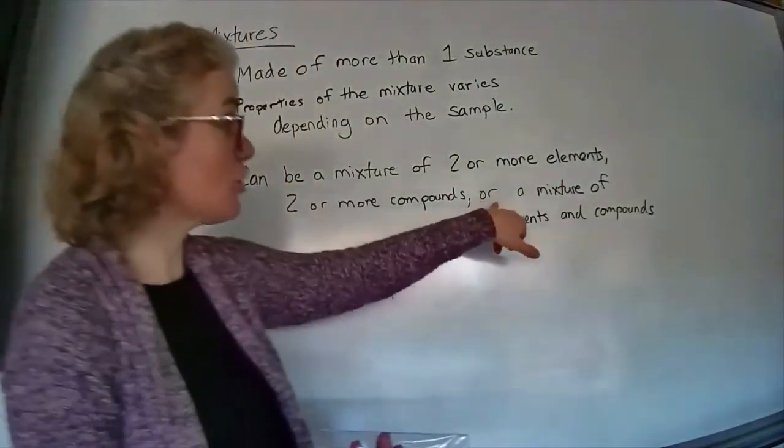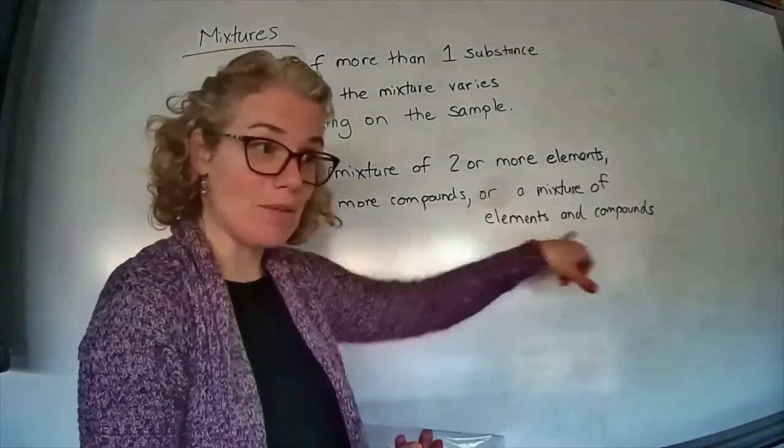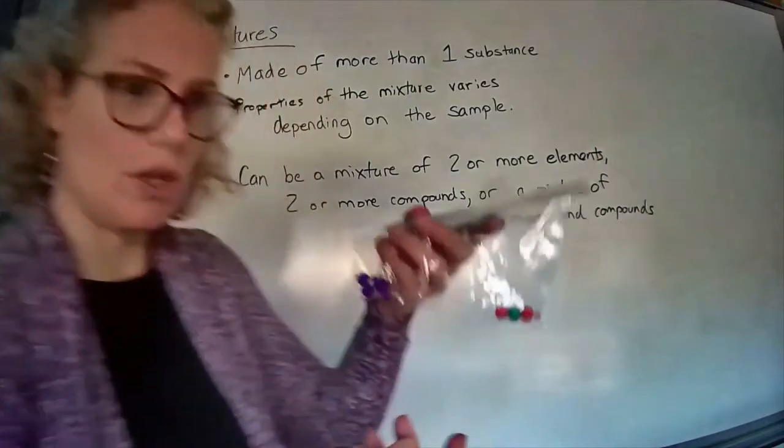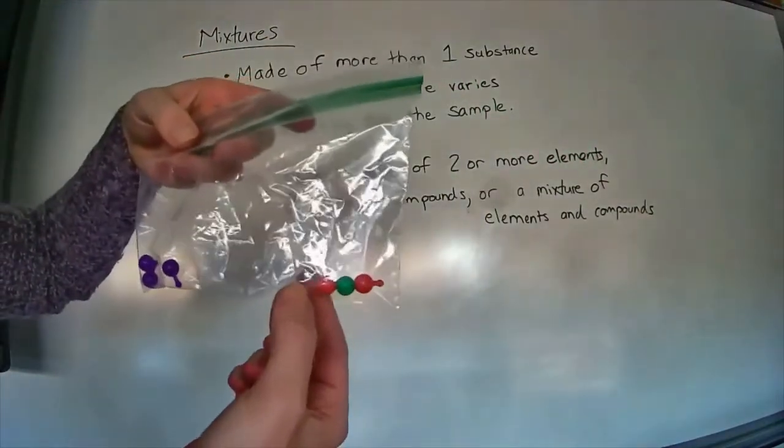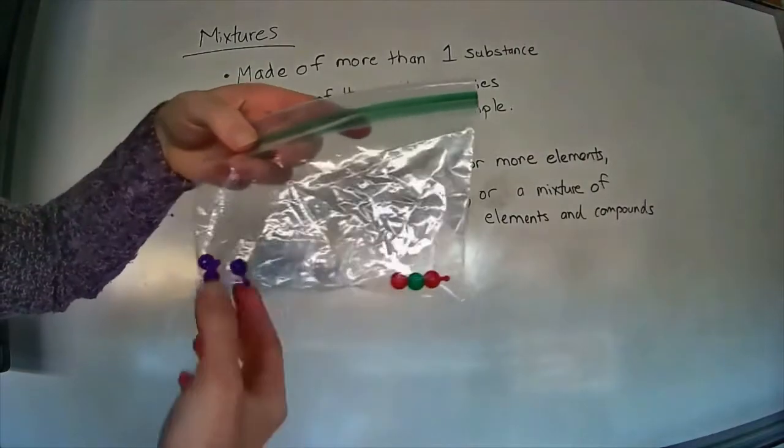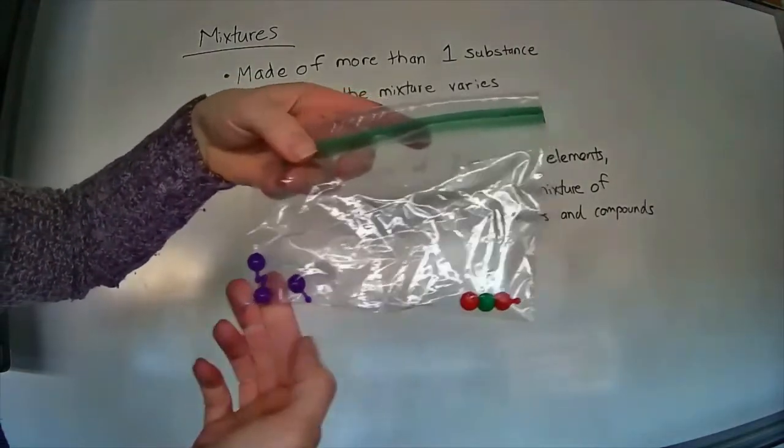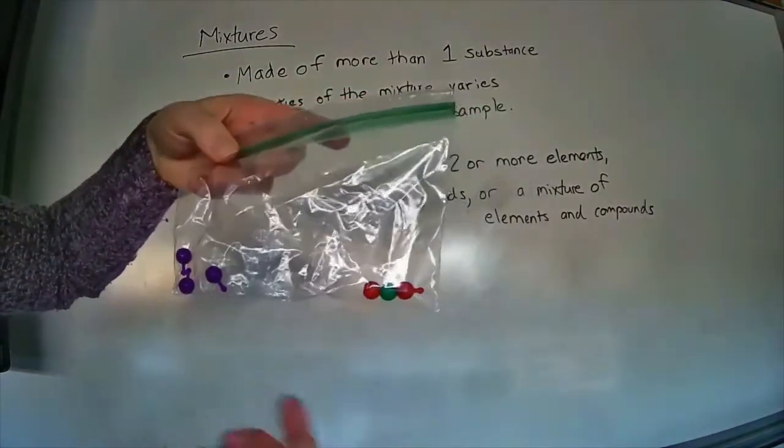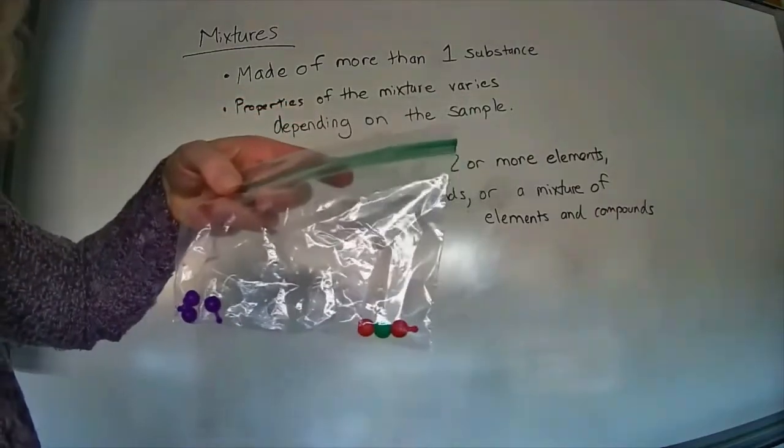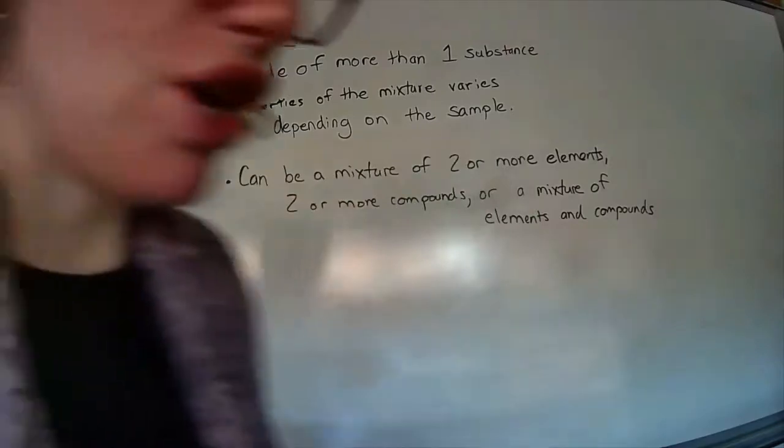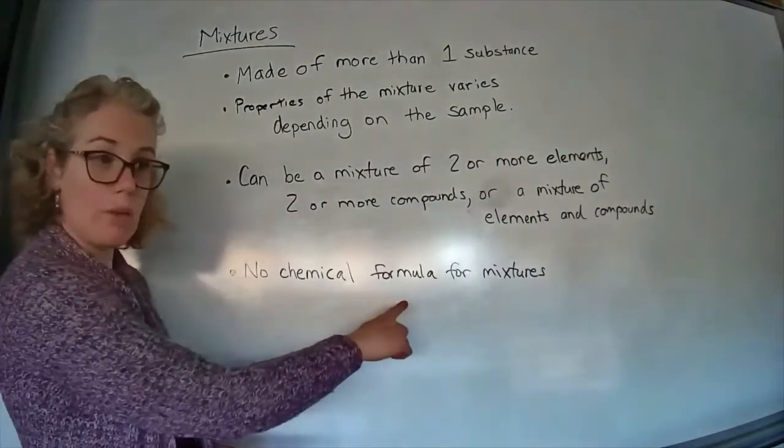A mixture could also be a mixture of elements and compounds together. Here's my bag representing that. Over on this side I've got a compound, two or more different elements chemically combined, and here I've got an element. So this could be representative, maybe this is iron, and over here I've got water.